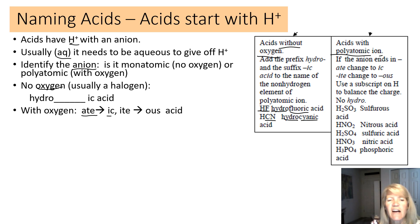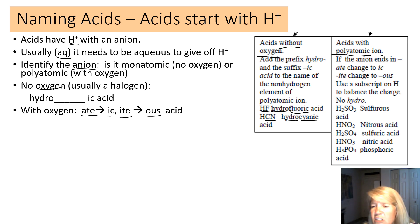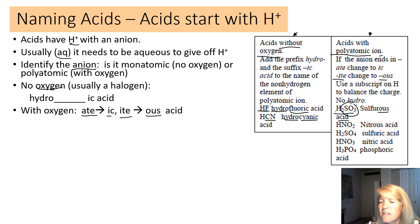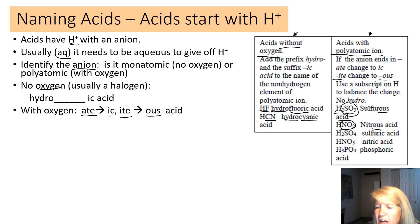For H2SO3: look at SO3²⁻, which is sulfite — it ends in -ite, so we change it to -ous, giving sulfurous acid. For HNO2: NO2⁻ is nitrite, again ending in -ite, so it becomes nitrous acid. For H2SO4: SO4²⁻ is sulfate — ends in -ate, so it changes to -ic, giving sulfuric acid.